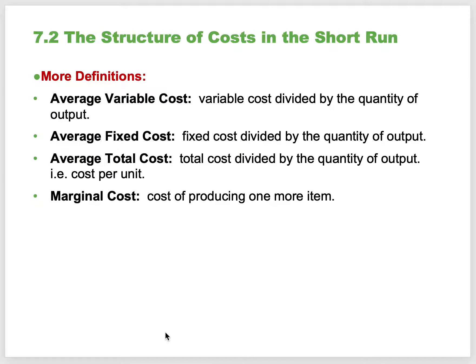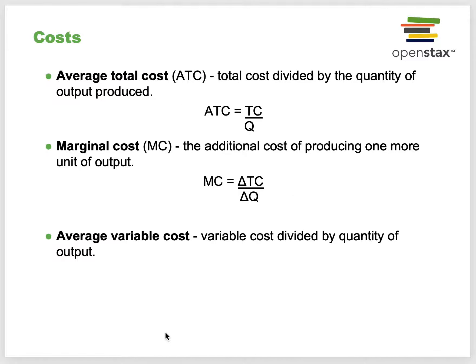Now we define specific cost measures. Average variable cost is variable costs divided by quantity of output. Average fixed cost is fixed cost divided by quantity of output. Average total cost is total cost divided by quantity of output. Marginal cost is the cost of producing one more item—the change in total cost divided by the change in quantity. In a linear cost model where total cost equals variable cost times quantity plus fixed cost, the slope—the variable cost—was always the marginal cost.